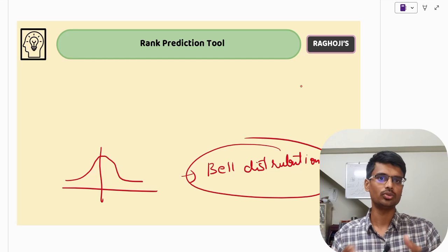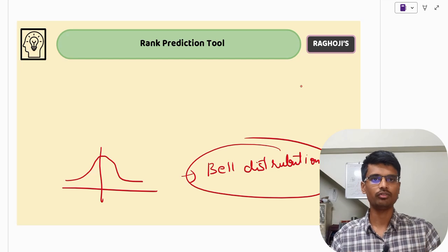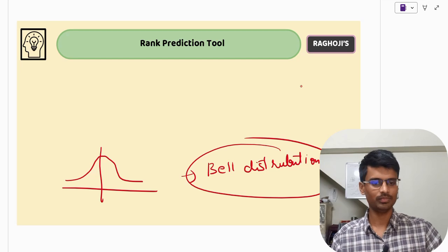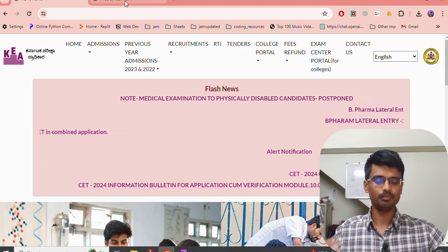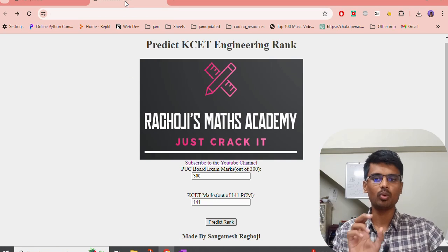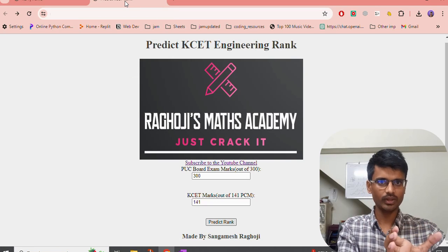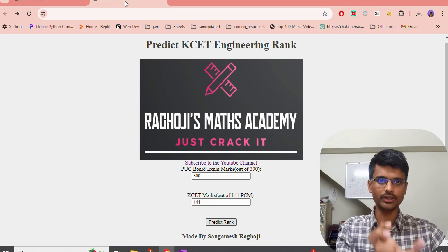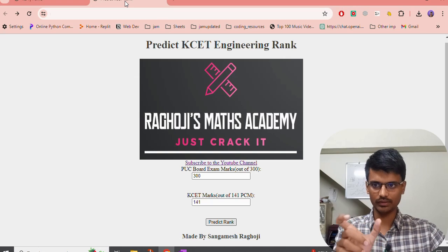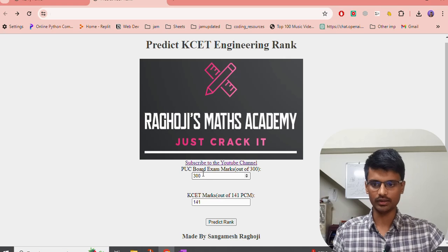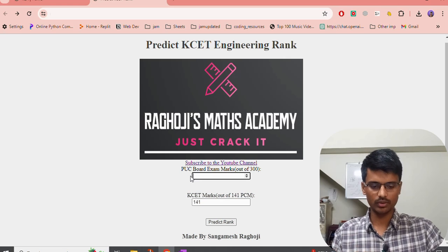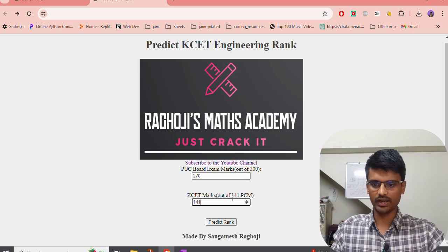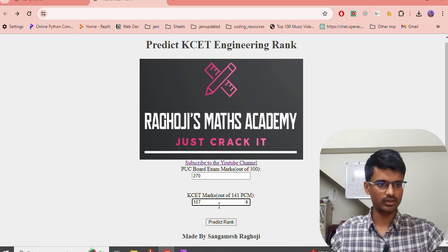Coming to the interesting part of the video, that is the rank prediction tool. Before I reveal this tool, this has been updated according to yesterday's KEA related update. I want to make one thing clear. It is just a prediction tool. It will not give you the exact rank. Actual rank cannot be predicted. I will also tell you the method that I have used. I have used the bell distribution curve. This is a statistical method using which we can predict the KCET ranks.